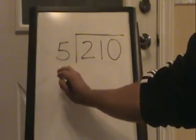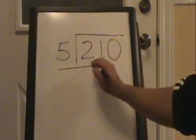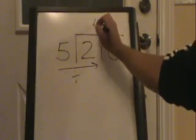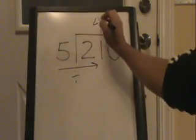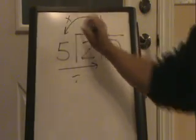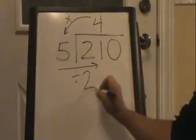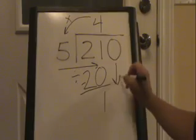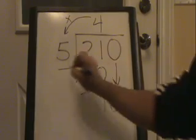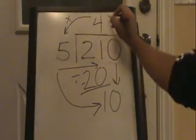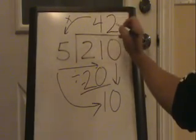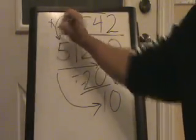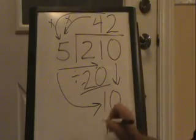First thing you do, see how many times the divisor goes into the number under the line — that amount goes above. Then multiply down, subtract that amount, bring the next number down. Divide the divisor into the number below, put your answer up top — that much is so. Next multiply down like you did before. That's all there is to it, not much more.